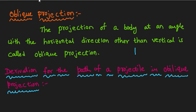If we project a body at an angle with the horizontal direction — not at 90 degrees vertical, but at some other angle with the horizontal plane — that is called oblique projection. For example, if we throw a ball at an angle with the horizontal direction, that is oblique projection.